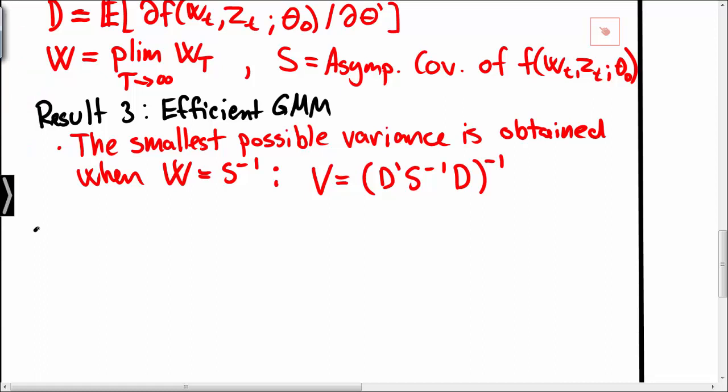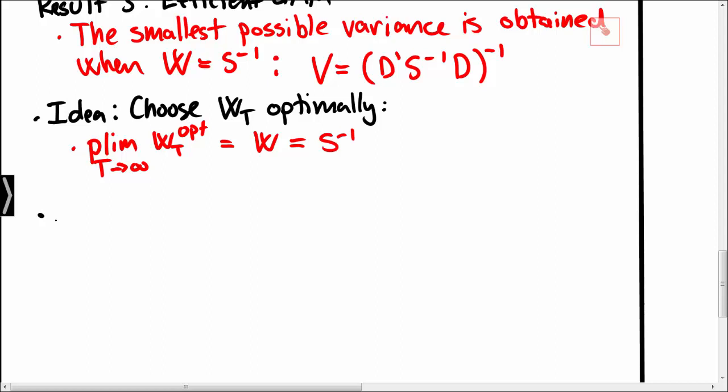Hence our aim should be to choose a weight matrix WT that has limit given by the inverse of S in order to obtain the optimal weight matrix. And it follows that we essentially just need a consistent estimator for S in order to get an optimal weight matrix.